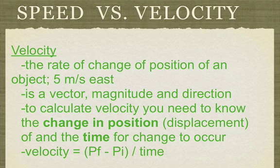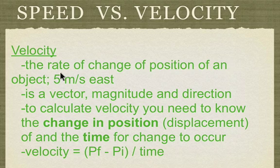Next, velocity. Like displacement, velocity has a really specific definition that a lot of people aren't familiar with: it's the rate of change of position of an object, and it is a vector. It looks kind of like speed, but it has a direction. A lot of people will say velocity is speed with a direction. For example, our speed might be 5 meters per second, but in this case we're going to the east.